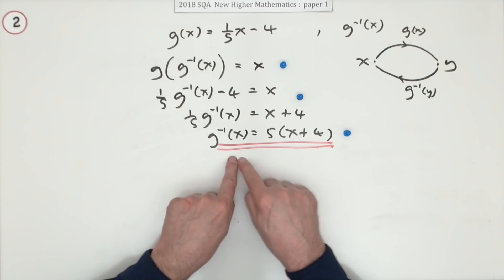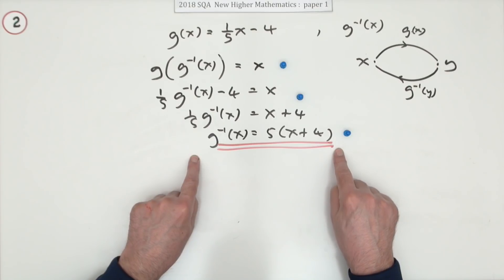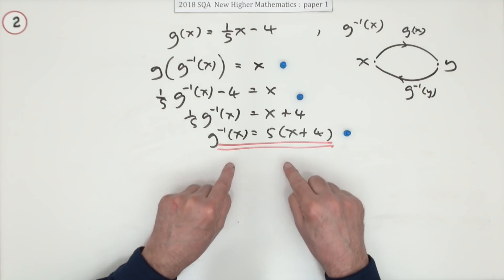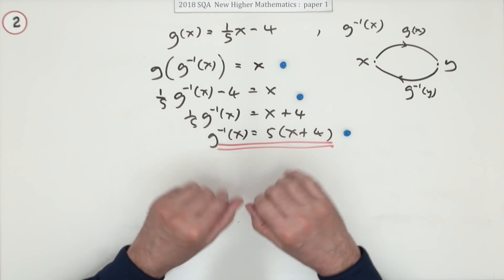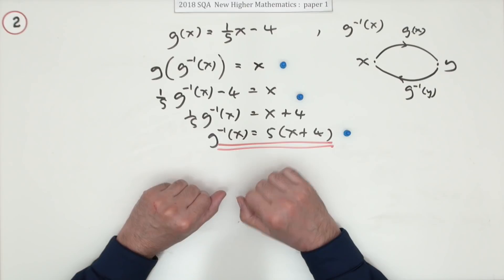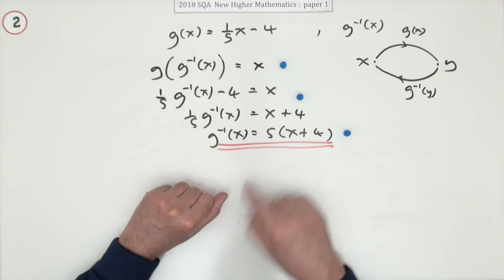Now one thing the marking scheme was that if you just wrote this answer down with no working at all, you'd get all three marks, three out of three. Now that doesn't usually happen so you can't bank on that, you can't guarantee that'll be the case. If you knew it was going to be the case, you could have answered that just with your fingers, just by thinking what happens here.